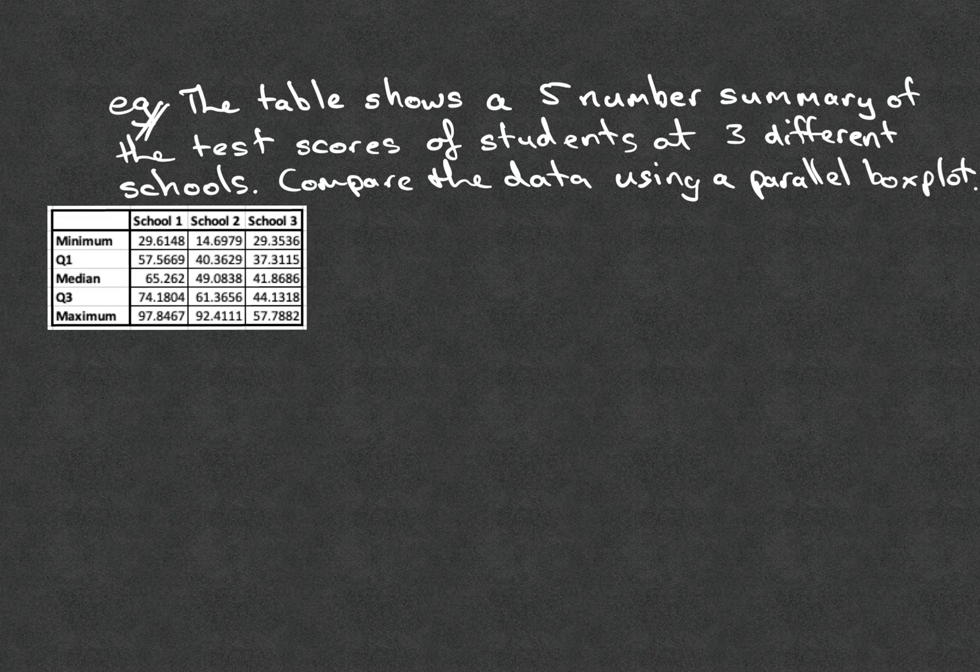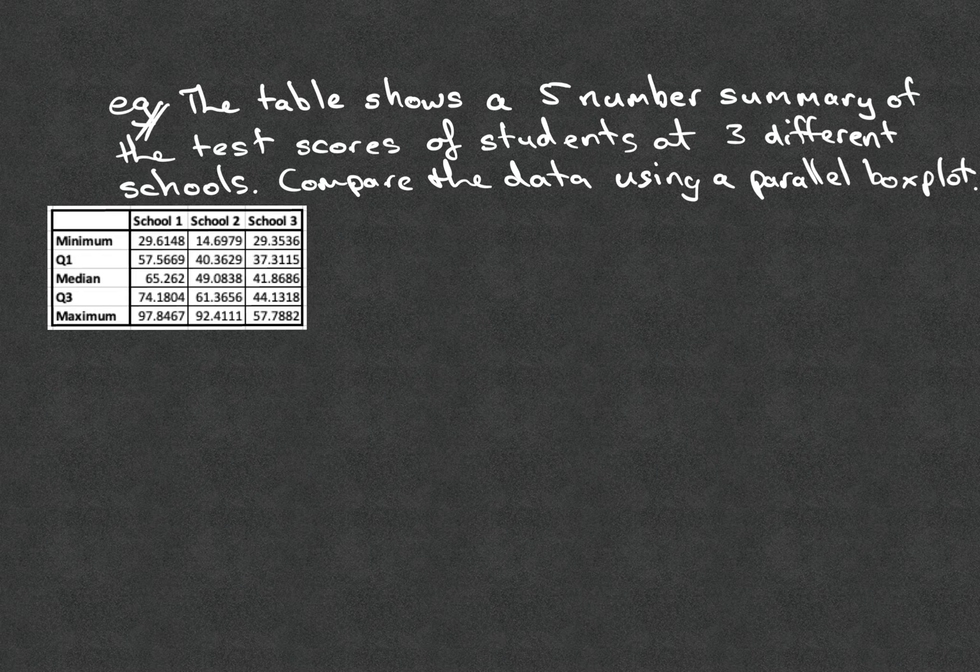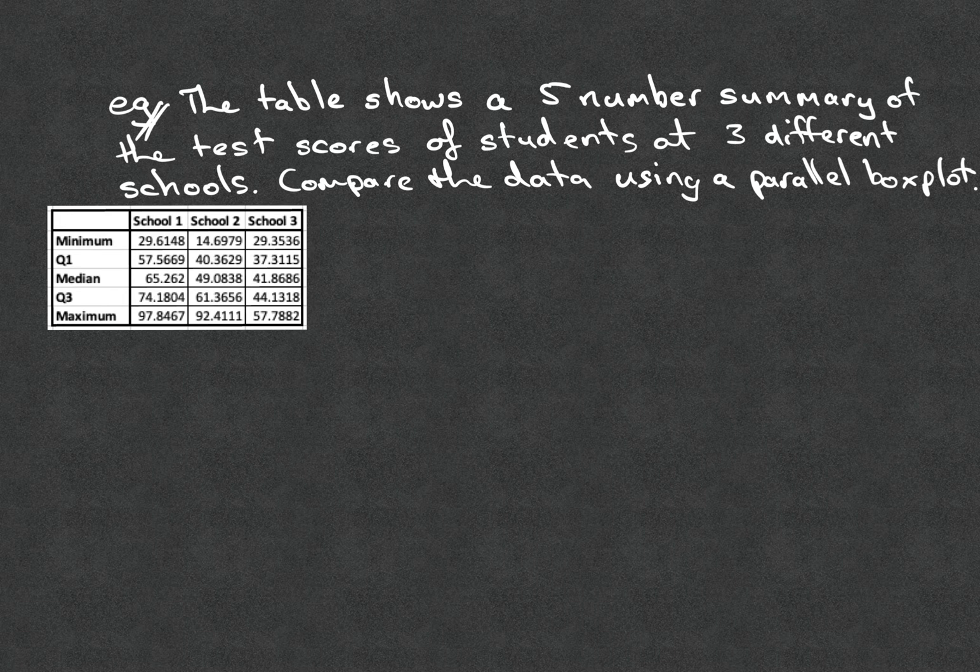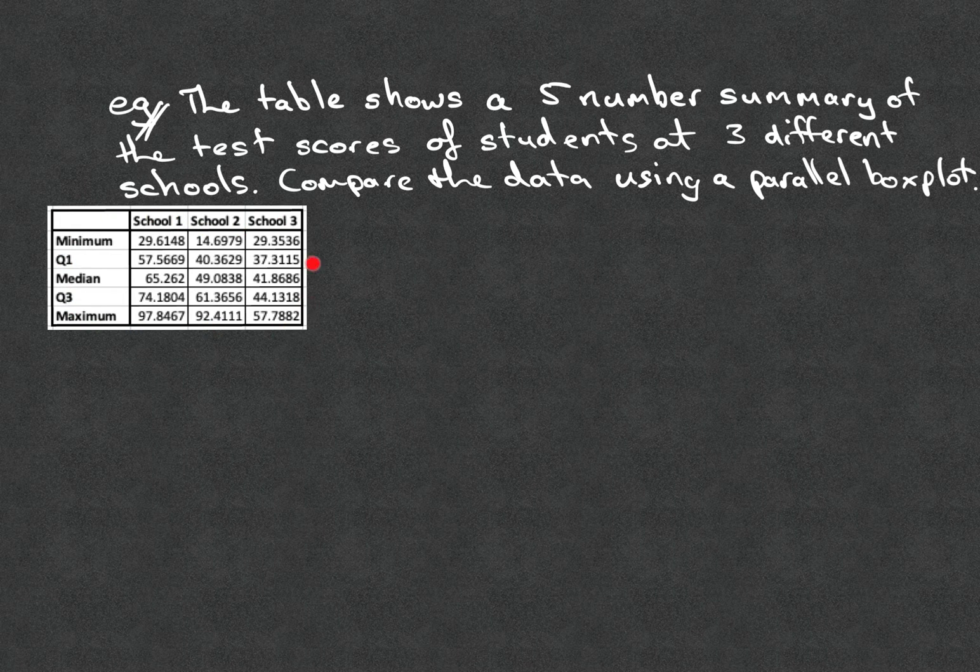The example says that we have a table showing a five-number summary of the test scores of students at three different schools. And what we're going to try to do is compare the data using a parallel box plot. So first of all, let's just take a look at the table.